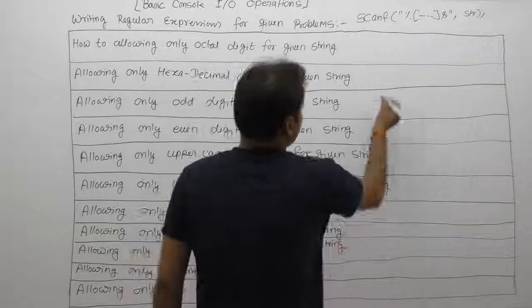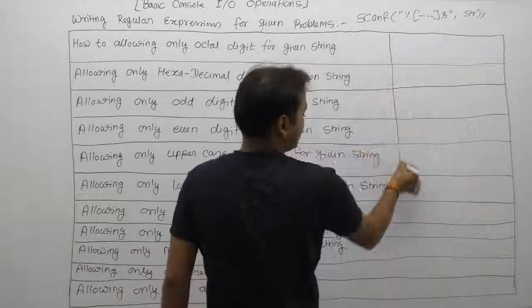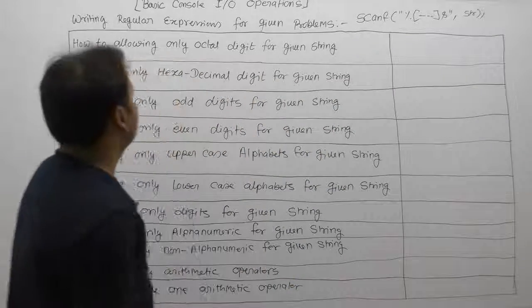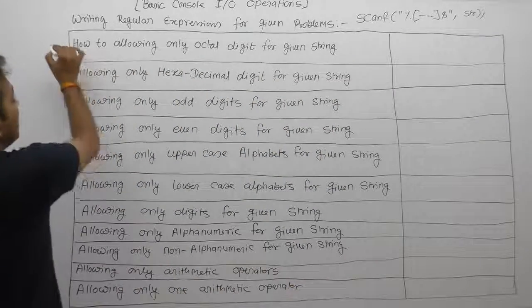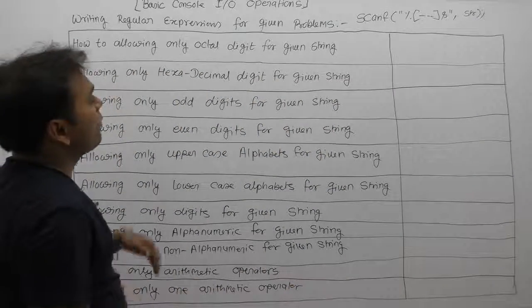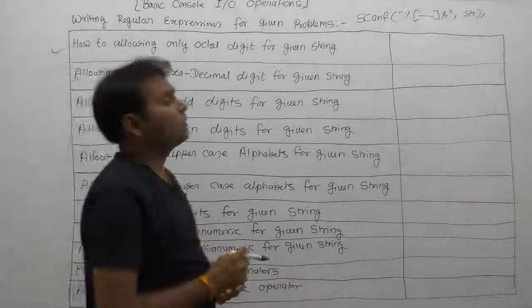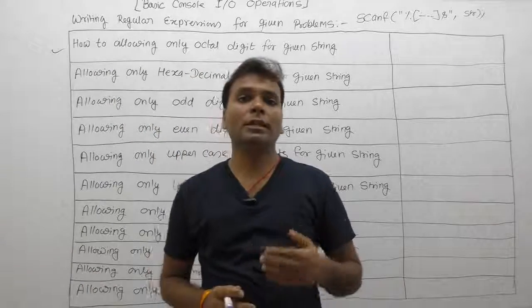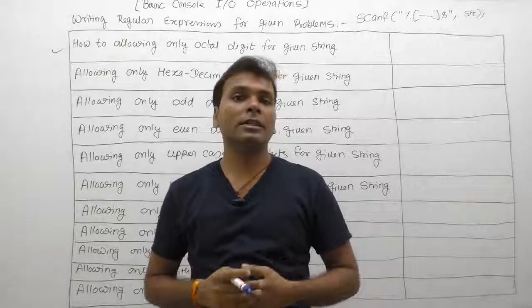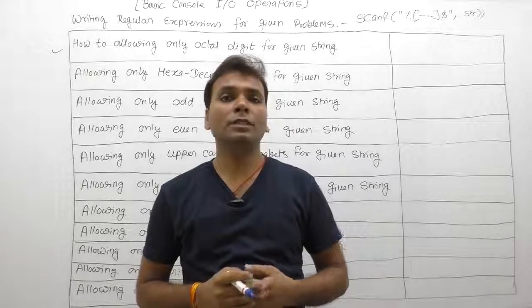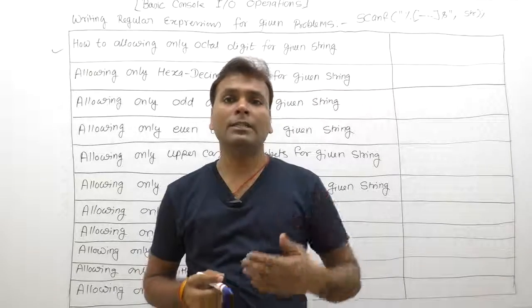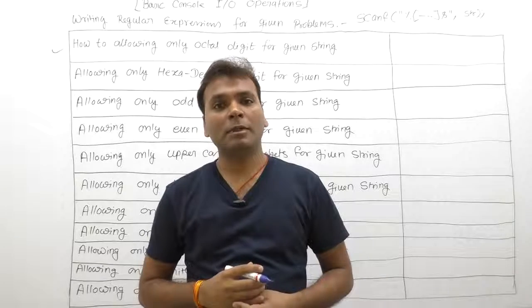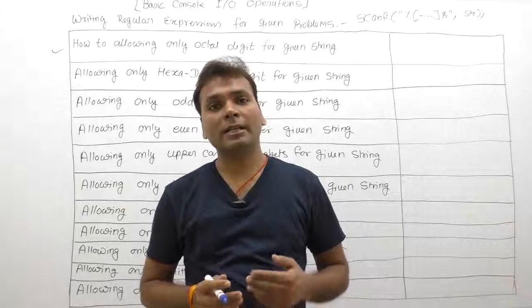Solving these problems one by one. First problem: how to allow only octal digits for a given string. Suppose you want to read only octal digits using scanf for a given string or character array — only octal digits.